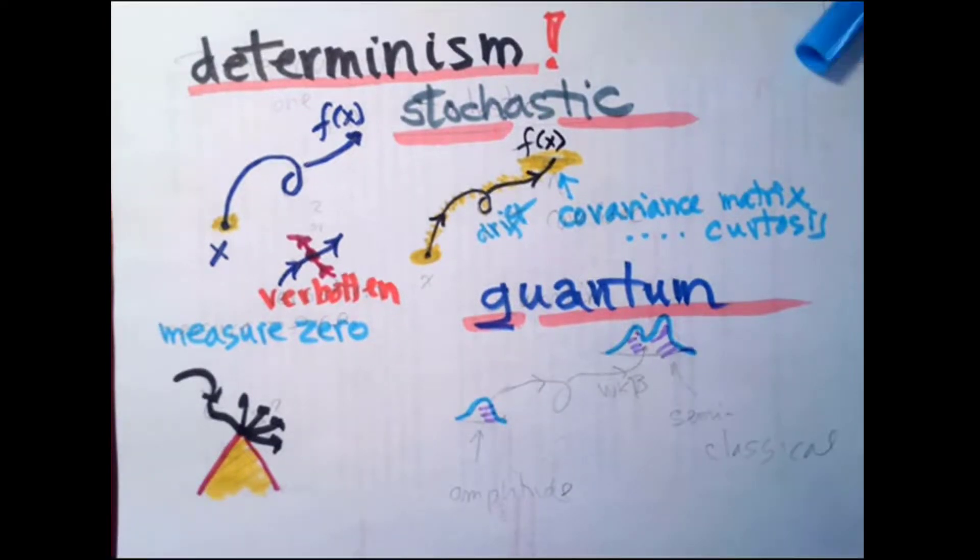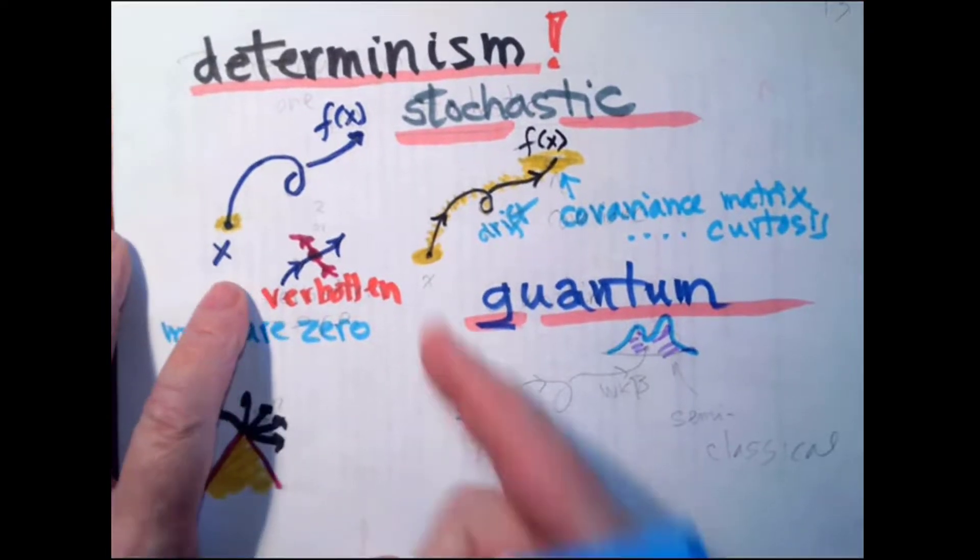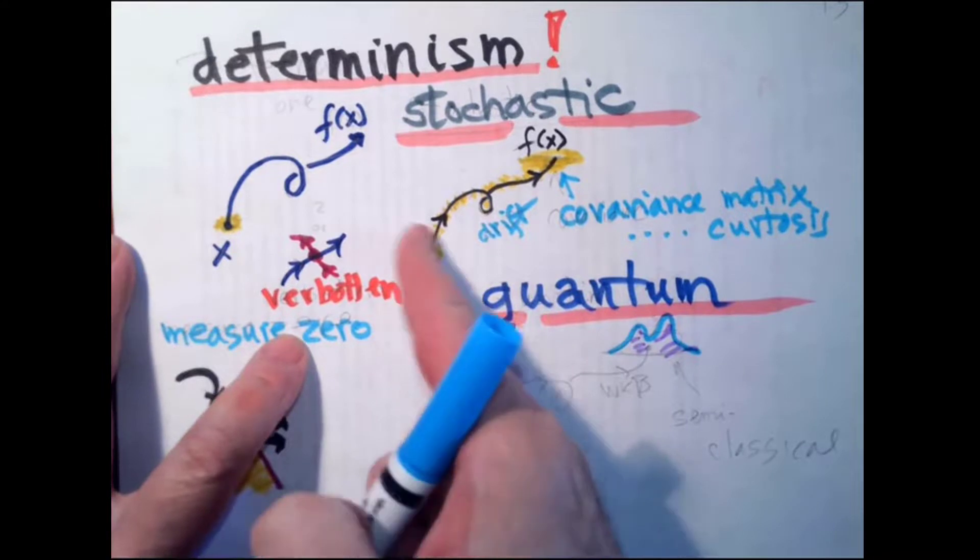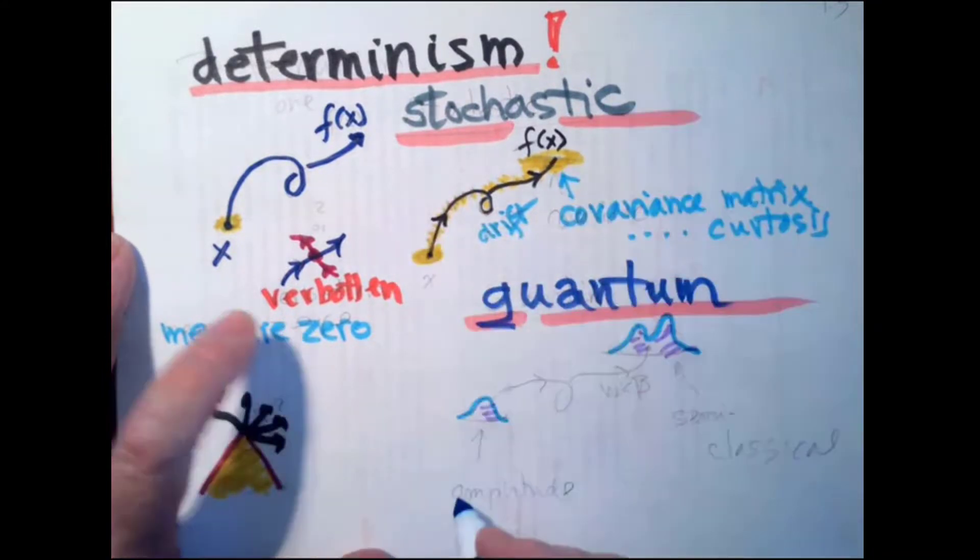But in quantum mechanics, you deal, here you deal with probabilities, how likely am I to be close to this trajectory? In quantum mechanics, you deal with probability amplitudes.